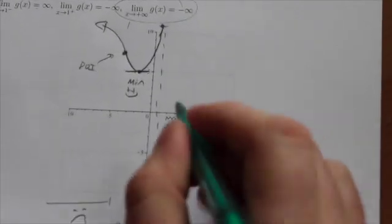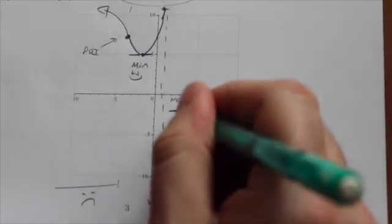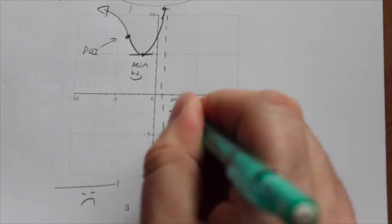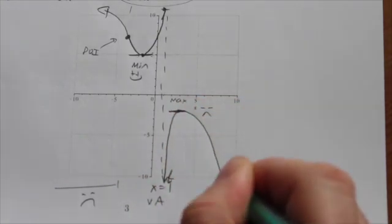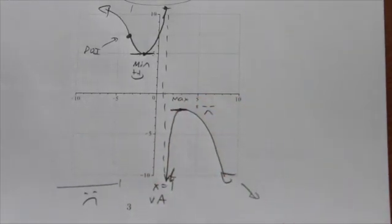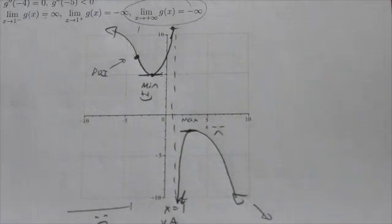On the other side of the asymptote, this thing is dropping down. We already know that this is a max. And then to the right of that, it just drops down to infinity. So our graph must look something like that.